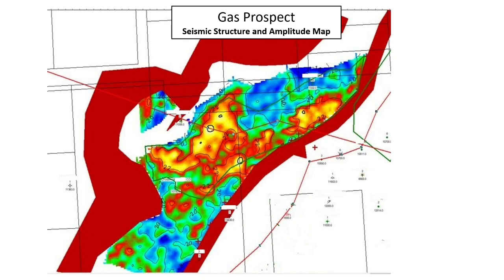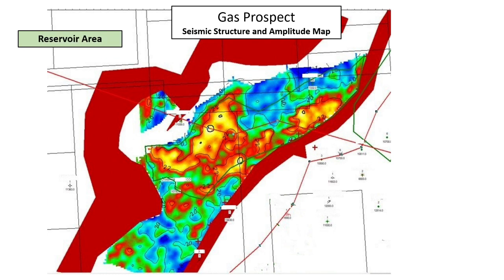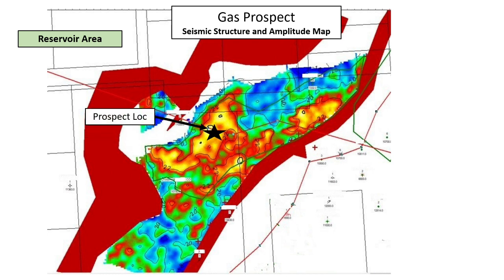First, let's look at this seismic structure map with amplitude. The bright amplitude is shown in yellow and red, and we believe this to be a sand thickness or hydrocarbon indicator. We're going to use this map to help determine the reservoir area for our prospect. Our prospect is the black star, located right in the bright amplitude where we think there's a good hydrocarbon indicator.